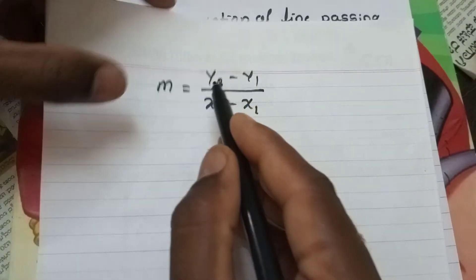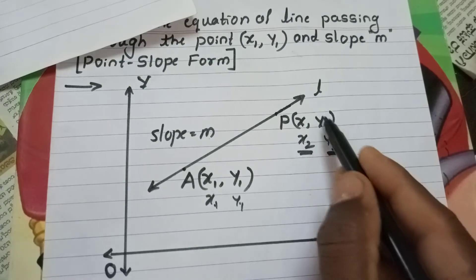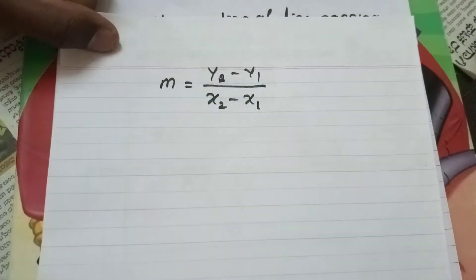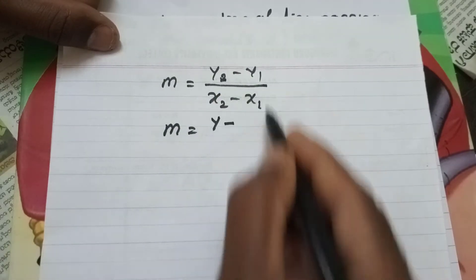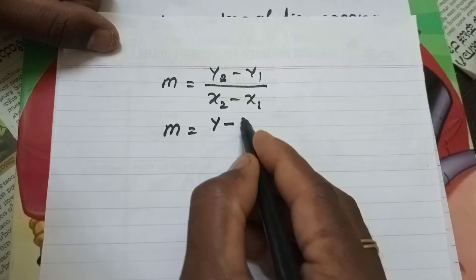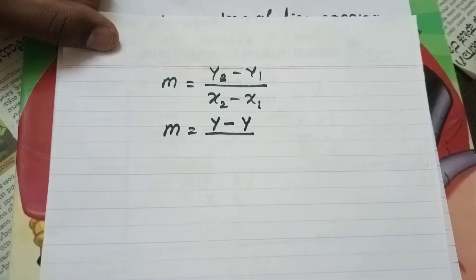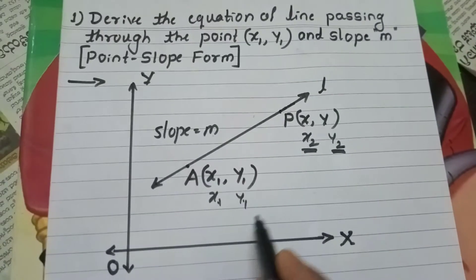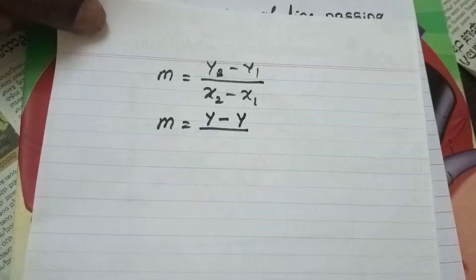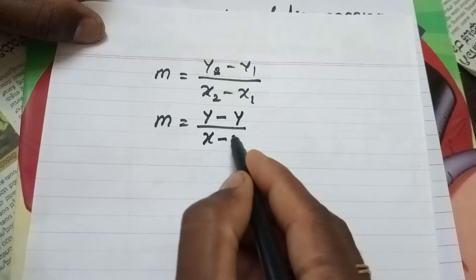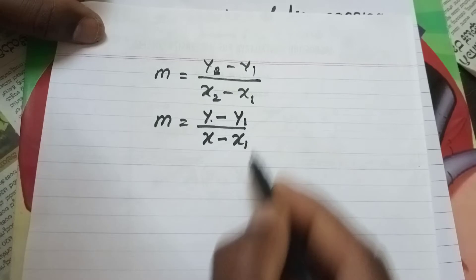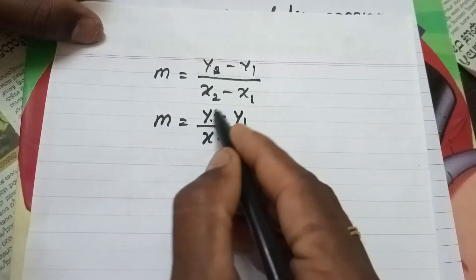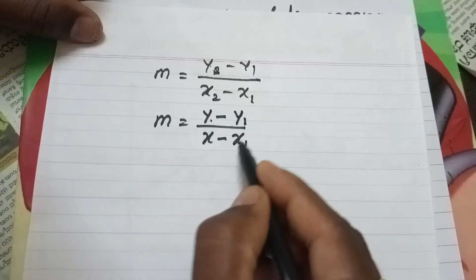So substituting: m is equal to y minus y1 divided by x minus x1. Therefore the point-slope form equation is: y minus y1 is equal to m into (x minus x1).